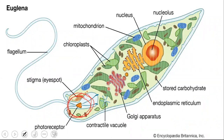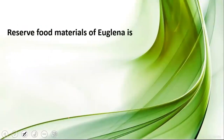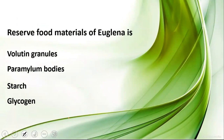When Euglena is on the surface layer of water, because of its photoreceptor cells it moves toward sunlight and can make its own food, acting as an autotroph. When it is at the bottom of the ocean and cannot sense sunlight, it cannot make food and acts as a heterotroph. Euglena consists of a nucleus, mitochondria, chloroplast, endoplasmic reticulum, and photoreceptor cells.